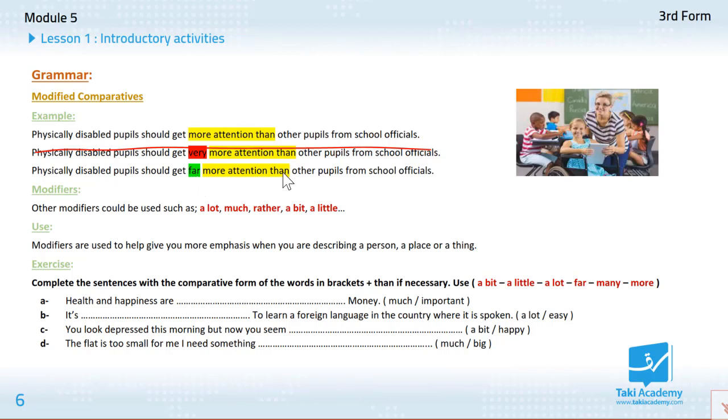We have the comparative, and here we use it to modify the degree of the comparative. Which means, in order to change the degree, or in Arabic we say darajat al-muqarama. It's a stronger form of more, stronger than more, aqwa min more. So other modifiers could be used like far.